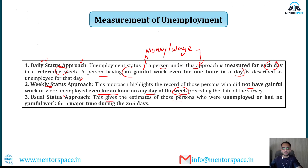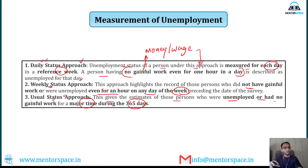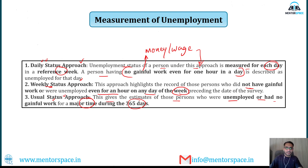The third approach is the Usual Status Approach, which gives an estimate of those persons who had no gainful employment for a major part of 365 days. If a person is unemployed for a major period of the year, that approach to calculating unemployment is called the Usual Status Approach.